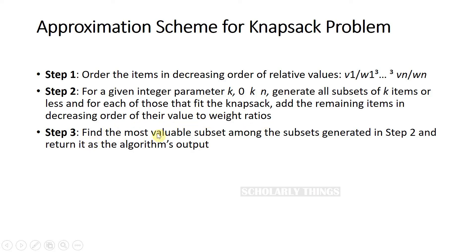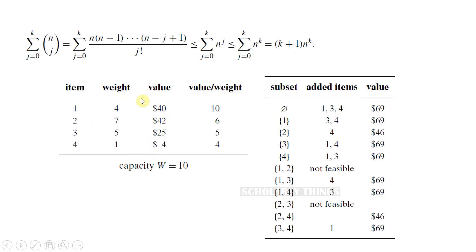Step 3: find the most valuable subset among the subsets generated in step 2 and return it as the algorithm's output. Taking this example, the algorithm generates all these subsets and finally takes the most valuable subset as the output.